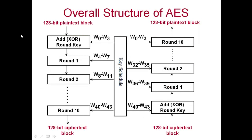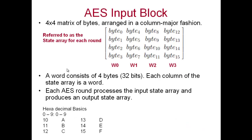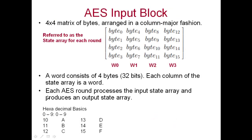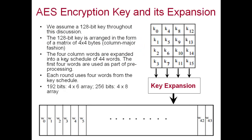For every round we input what is called a state array and get an output state array. The plain text block, which is 128 bits, is the initial state array. It goes through the XOR operation and then into round one. The state array is 128 bits broken down as a 4-by-4 matrix where each entry is a byte — 16 bytes times 8 bits is 128 bits. The bytes are arranged in column-major order, so the first column has the first four bytes.